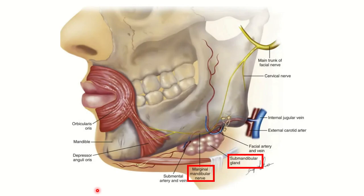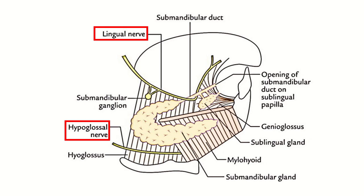Here we can see the submandibular gland, which is located just below the mandible. Around it we can see important groups of muscles and vessels. One important nerve visible here is the marginal mandibular nerve, which may be damaged during excision of the gland. There are other nerves in the area that may also get damaged.